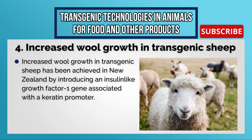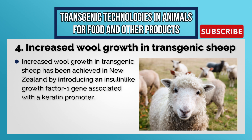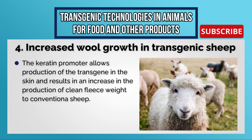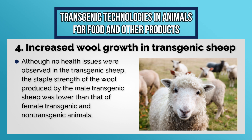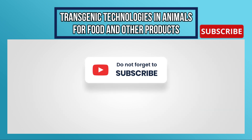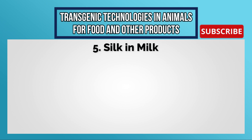Increased wool growth in transgenic sheep has been achieved in New Zealand by introducing an insulin-like growth factor 1 (IGF-1) gene associated with a keratin promoter. The keratin promoter allows production of the transgene in the skin and results in an increase in the production of clean fleece weight in conventional sheep. Although no health issues were observed in the transgenic sheep, the staple strength of wool produced by male transgenic sheep was lower than that of female transgenic and non-transgenic animals.